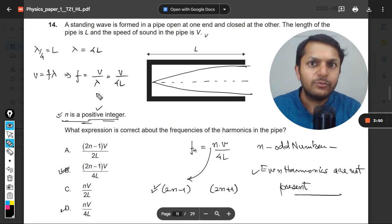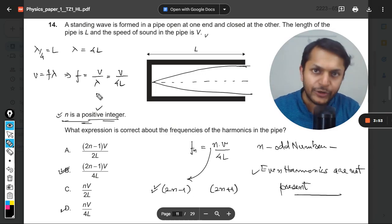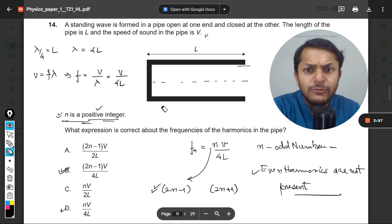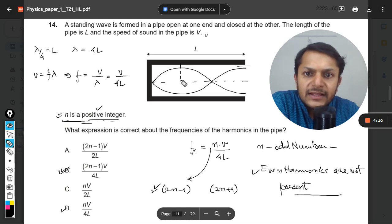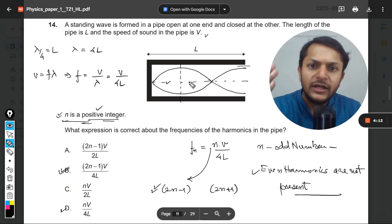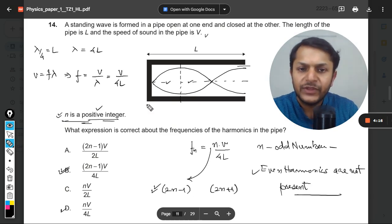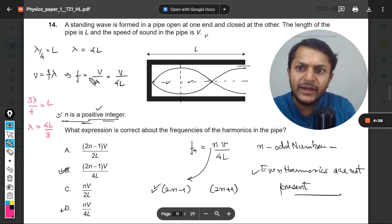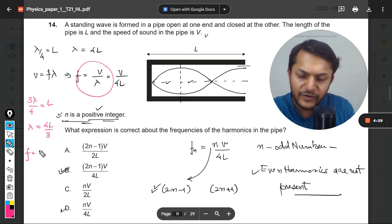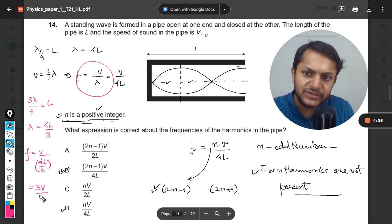Now similarly, if you go for the next harmonic—I must say not the second harmonic, but the next harmonic—the wave will be different. It would be looking like this. Clearly, this much is lambda by 4, second lambda by 4, and third lambda by 4. So in this case it becomes 3 lambda by 4 equals L. Wavelength will equal 4L by 3. And by using this formula, frequency will equal V divided by the wavelength, which is 4L by 3. So it becomes 3V divided by 4L.